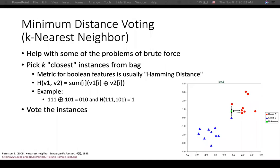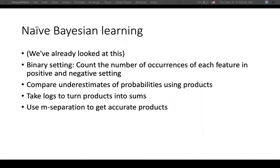Let's talk a bit about naive Bayesian learning, which we covered in previous lectures. In binary settings, we count the number of correctness of each feature in positive and negative settings, then compare estimates of probabilities using products. Because of log properties, we use logs to turn products into summations, and we use m-estimation to get accurate products.